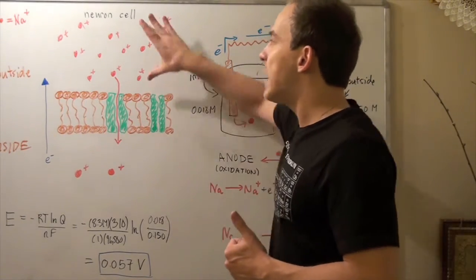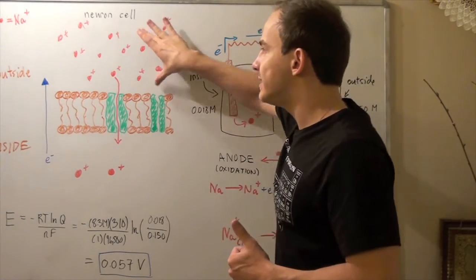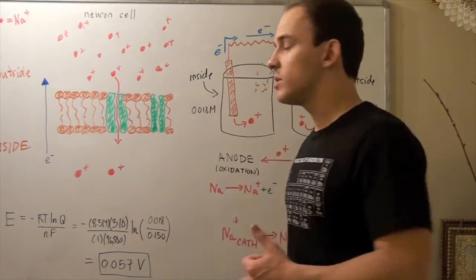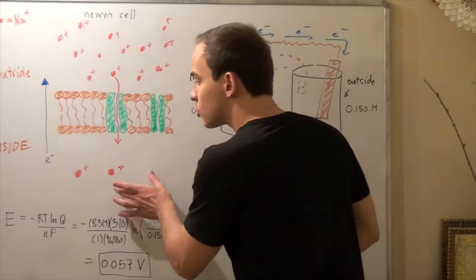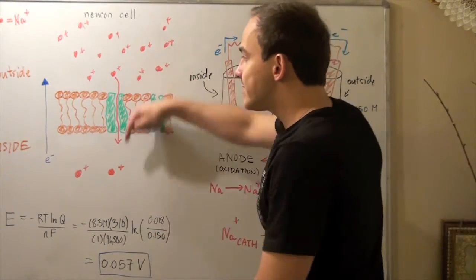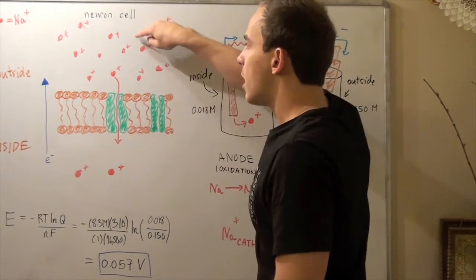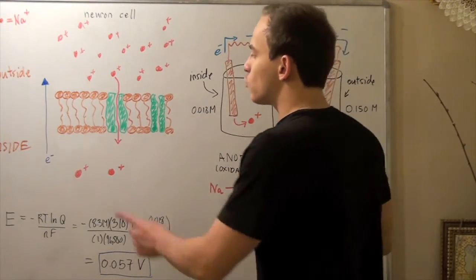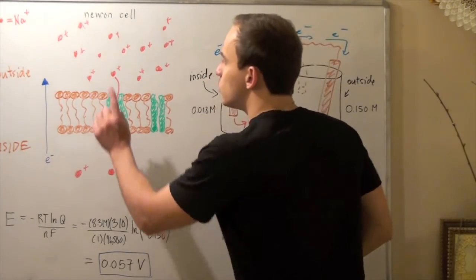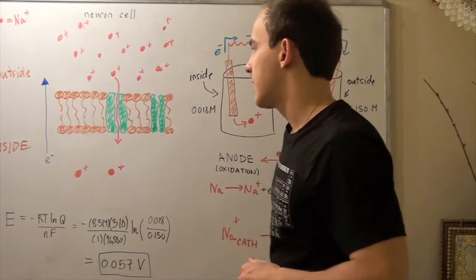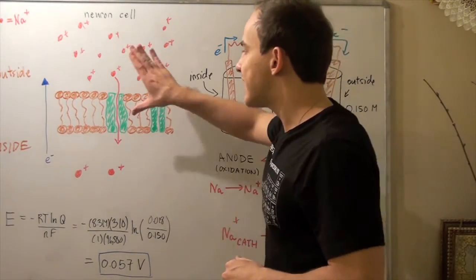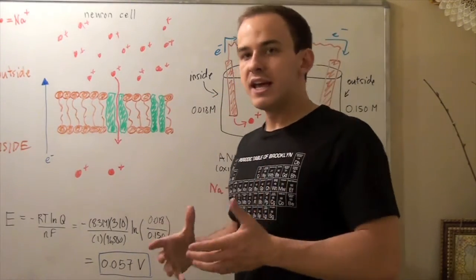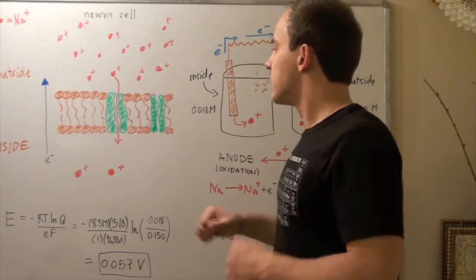When the chemical gradient — or concentration gradient — equals the electrical gradient, the rate at which molecules are moving inside equals the rate at which they're moving to the outside. That's exactly what a resting potential is: it's an equilibrium state.